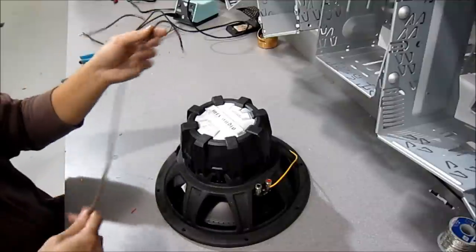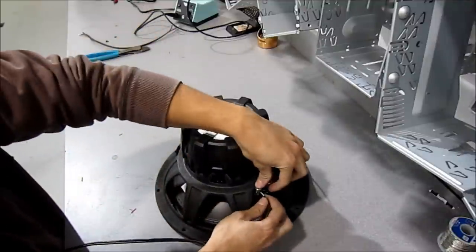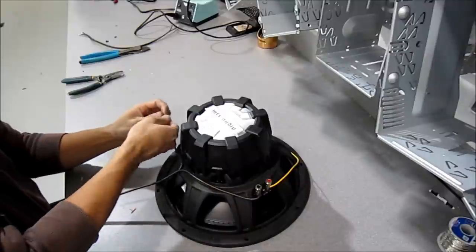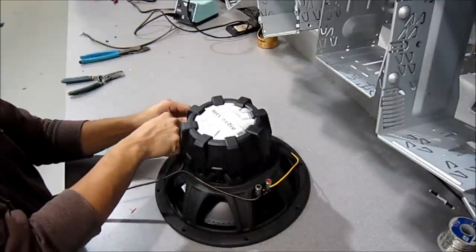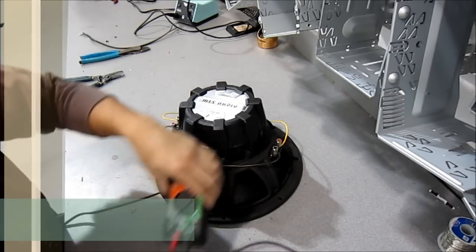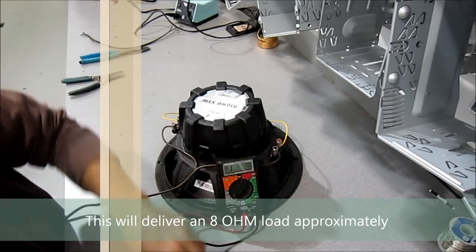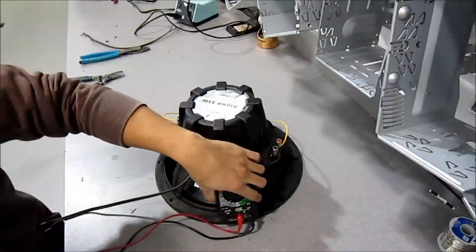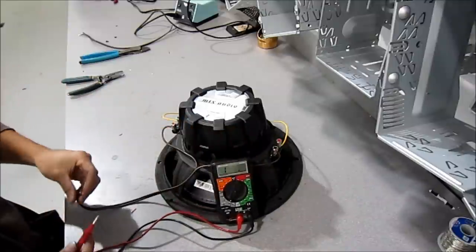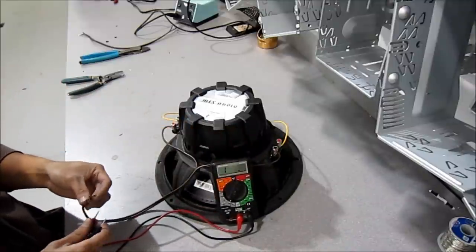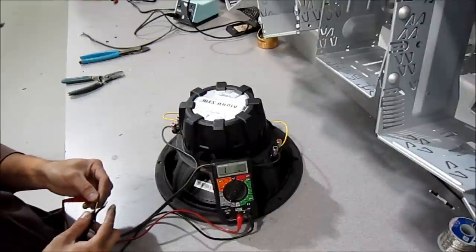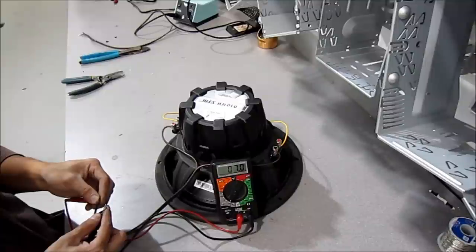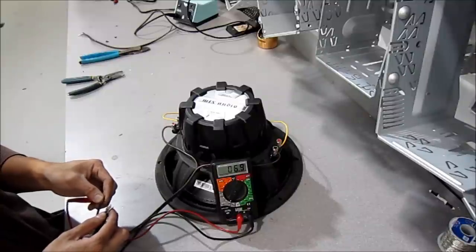And then on my pair of wires, one end is going to go into the negative. And the other end will go into the positive. Now you're wired up in series. Let's show you a test. It's around 7 ohms.